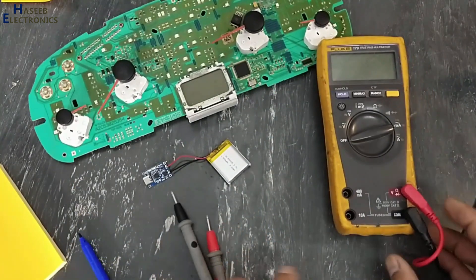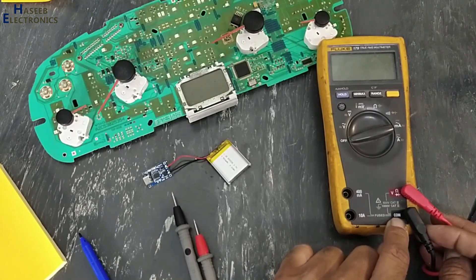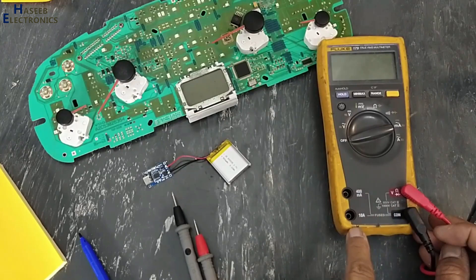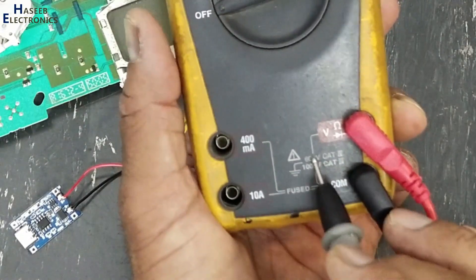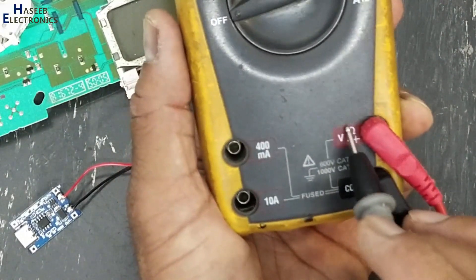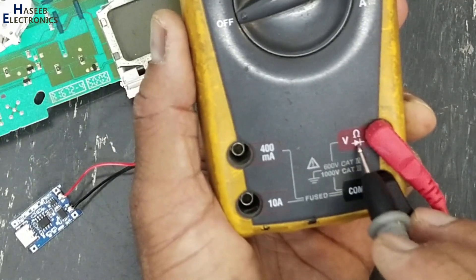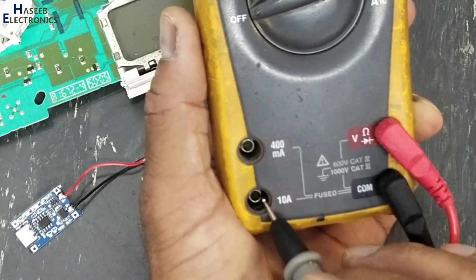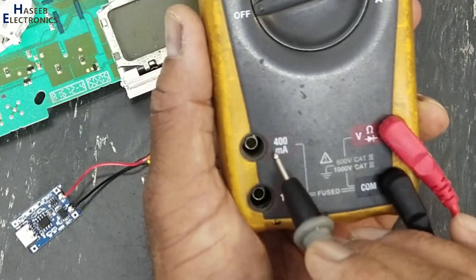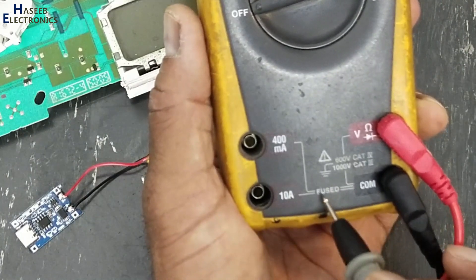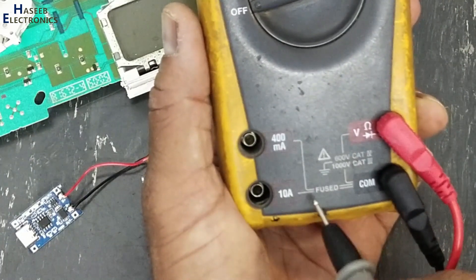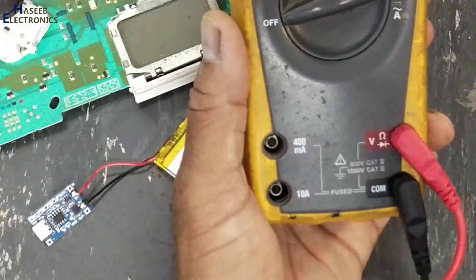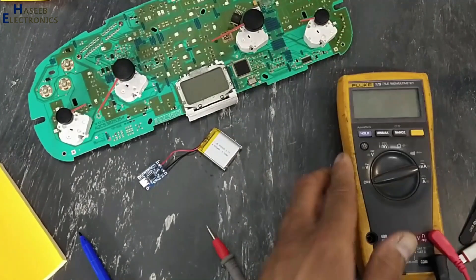When we measure voltage we use these two test sockets: common, voltage ohms and diode. But when we are measuring current there are different sockets. Common will remain same, but for current we will use these two test sockets. This is for 10 milliampere and this is maximum 400 milliampere. These are fused inside, there is fuse because it is working as a shunt. That time we will use this multimeter in series with that circuit.